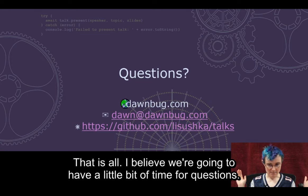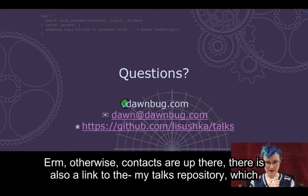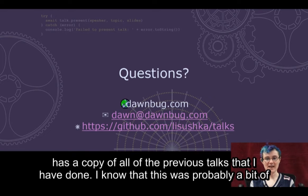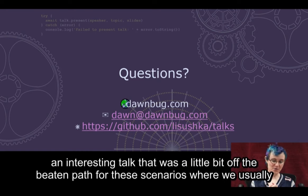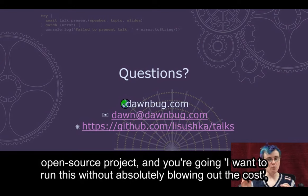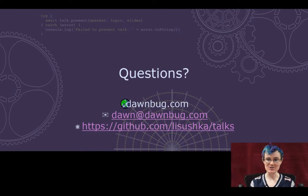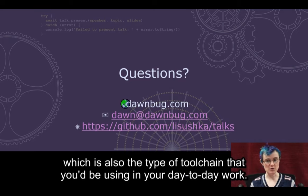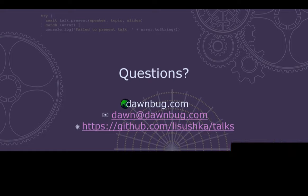That is all. I believe we're going to have a little bit of time for questions. Otherwise, contacts are up there. There is also a link to my talks repository, which has a copy of all of the previous talks that I have done. I know this was probably a bit of an interesting talk that was a little bit off the beaten path for scenarios where we usually deal with enterprise-type things. But I'm hoping that if you've had an idea for some sort of open source project and you're wondering how to run it without blowing out the cost, now you've got some idea of one particular toolchain you can use to make that happen — which is also the type of toolchain you'd be using in your day-to-day work.